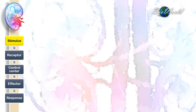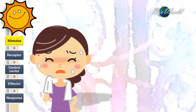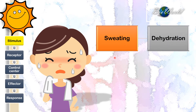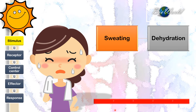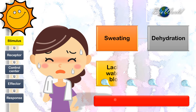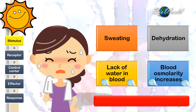The stimulus that causes a change in our blood osmotic pressure can be due to exercise or standing under the hot sun. In either case, we will start to sweat a lot, leading to dehydration. Water in our blood will begin to diffuse out to the cells to compensate for the water lost by sweat, resulting in insufficient water in the blood. The blood becomes concentrated, meaning blood osmolarity increases.